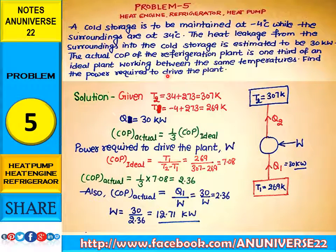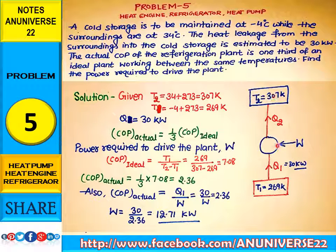According to the given parameters, the lower temperature T1 is minus 4 plus 273, which equals 269 Kelvin. The higher temperature T2 is 34 plus 273, which equals 307 Kelvin. This is the cold storage or refrigeration plant, with T1 as the lower temperature and T2 as the higher temperature.